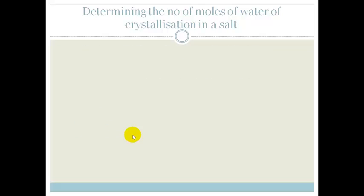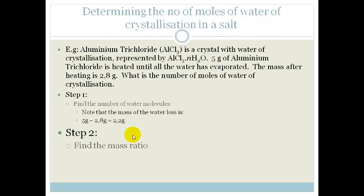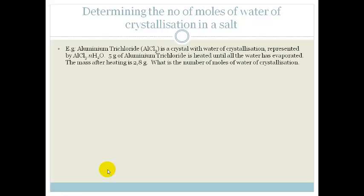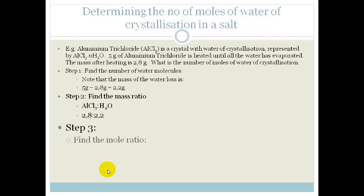So if we then look at the mass ratio between the AlCl3, which is Aluminium chloride and the water, you can see it's 2.8 to 2.2. Everybody happy there? 2.8 of that is Aluminium chloride and 2.2 is the water. Now we need to find the mole ratio. So what we do is we divide each of those by the molar masses.